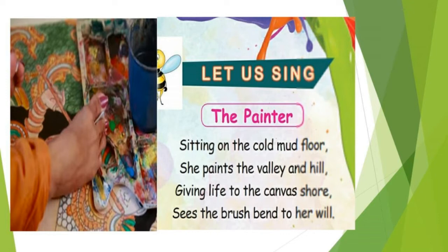The girl is sitting on the cold mud floor and she paints the hill and valley. 'Shore' means seashore, but in this place the canvas should be bordered and pinned on the shore. Her brush was curved according to her wish — here 'will' refers to her wish. In this first stanza, 'floor' and 'shore' are rhyming words, and 'hill' and 'will' are rhyming words.